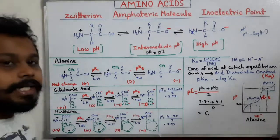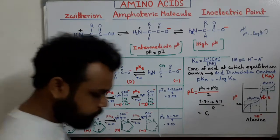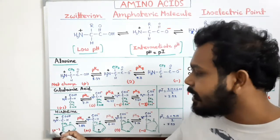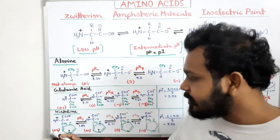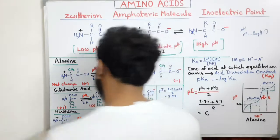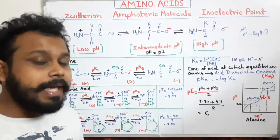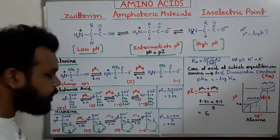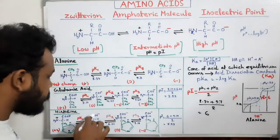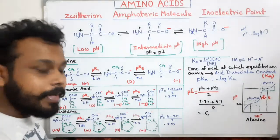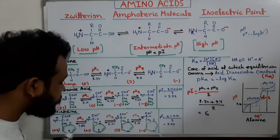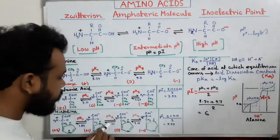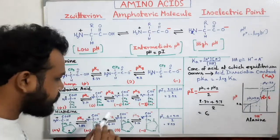Next is histidine, which is a positively charged amino acid. At low pH it carries a net charge of +2. When we raise the pH, the first hydrogen is released from the COOH group at pK1 = 1.82, leaving a +1 structure. When we add more base, the next hydrogen is released from the side chain imidazole NH+ group at pKR = 6.